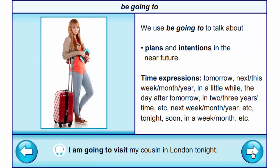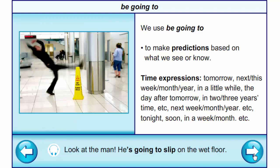We use be going to to talk about plans and intentions in the near future. Time expressions are: tomorrow, next week, this week, month, year, in a little while, the day after tomorrow, in two or three years' time, next week, month, year, tonight, soon, in a week, in a month, and so on. Example: I am going to visit my cousin in London tonight. We also use be going to to make predictions based on what we see or know. Example: Look at the man – he's going to slip on the wet floor.